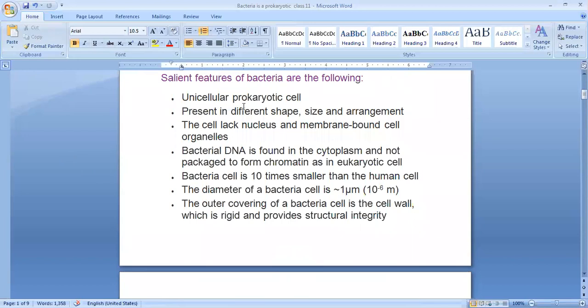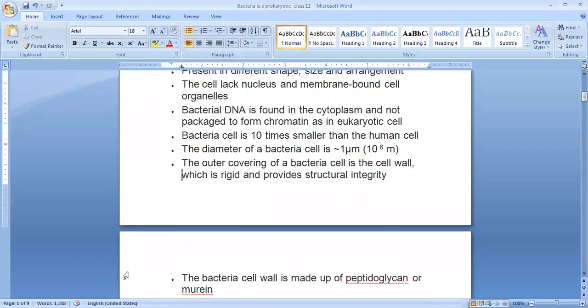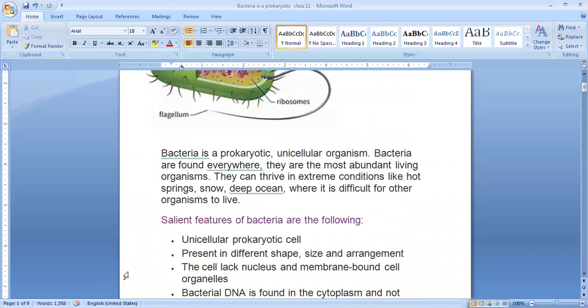They are unicellular prokaryotic cell present in different shapes, size and arrangements. They lack nucleus and membrane-bounded cell organelles. Even their DNA is found in cytoplasm and does not consist of any protective layer and these bacterial cells are 10 times smaller than a human cell. Now let us see its structure.